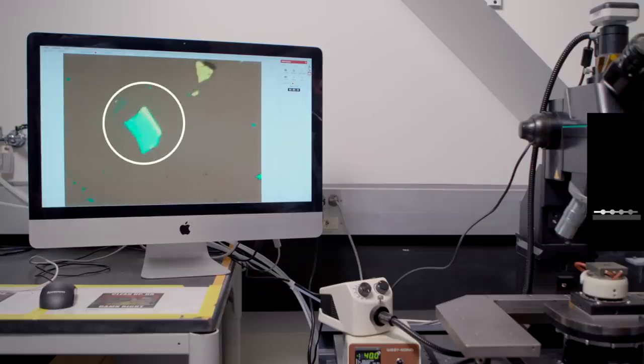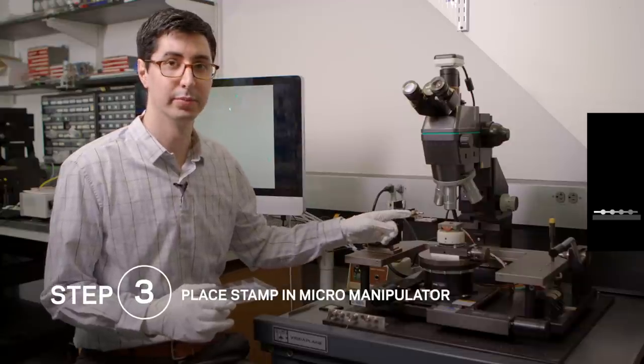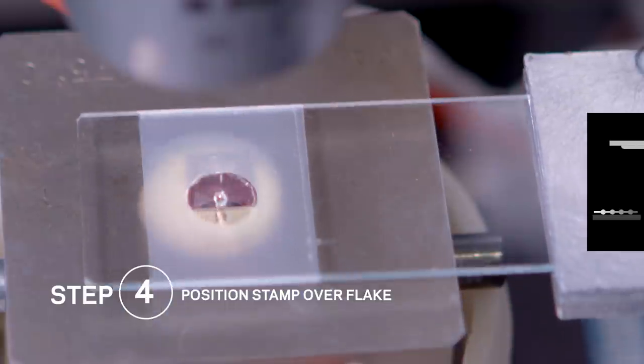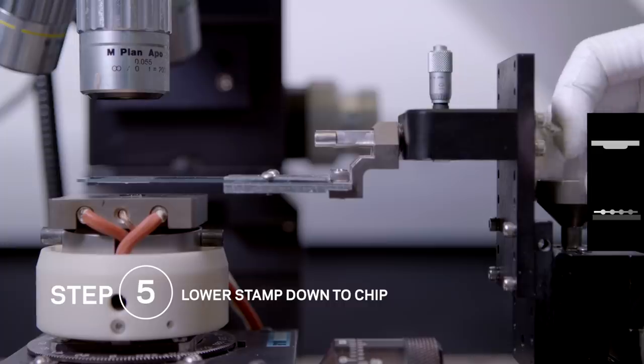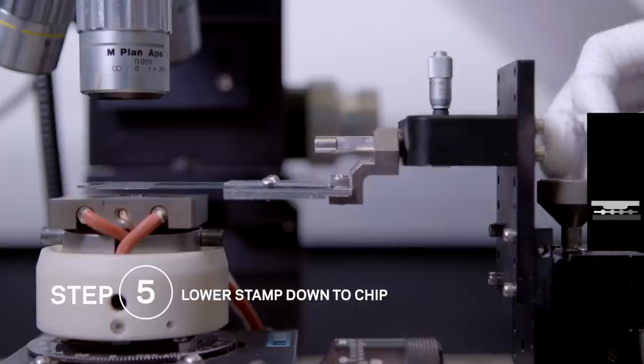Now that we've found the best flake, we'll next place our glass slide in the micromanipulator arm so that we can pick up the layers. We'll position the stamp right over the flake, lower it down, then we'll heat it up.